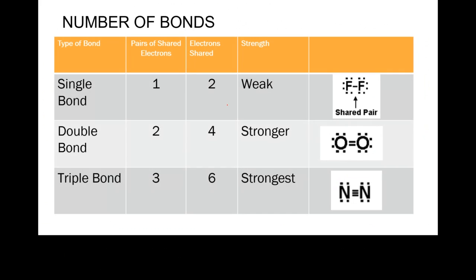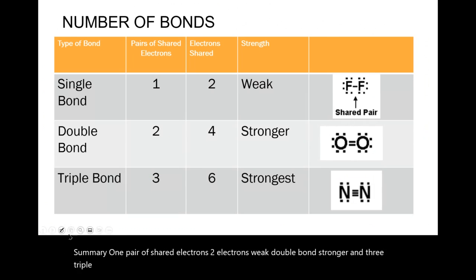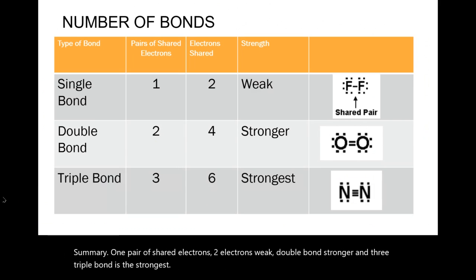Summary: a single bond has one pair of shared electrons — two electrons — and is the weakest. A double bond is stronger with two pairs. A triple bond is the strongest with three pairs of shared electrons.